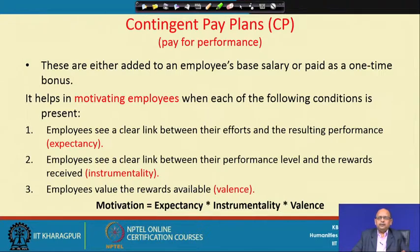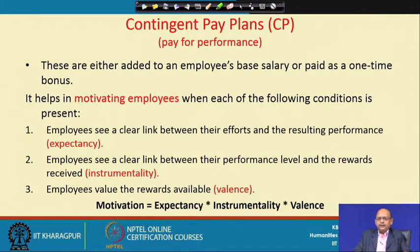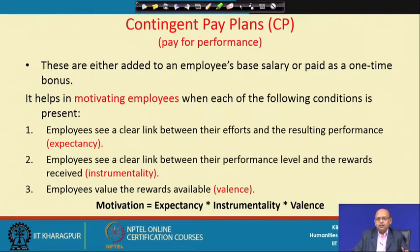Moving to the second level — instrumentality. Here, you try to establish a link between performance and reward. There are three variables: effort, performance, and reward. At the first level, you examine the relationship between effort and performance — a positive relationship. At the second level, you examine the relationship between performance and reward. Effort-to-performance leads to expectancy; performance-to-reward is instrumentality, meaning reward is instrumental on higher performance. If you perform well, you would get better reward.